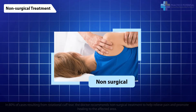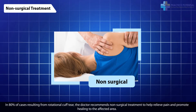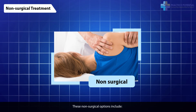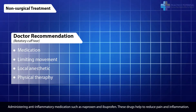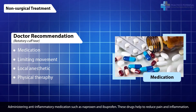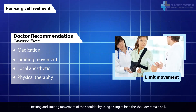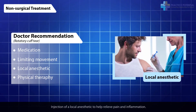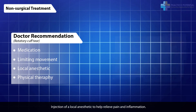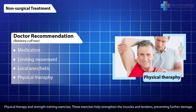Non-surgical treatment. In 80% of cases resulting from a rotator cuff tear, the doctor recommends non-surgical treatment to help relieve pain and promote healing to the affected area. These non-surgical options include administering anti-inflammatory medication such as naproxen and ibuprofen to reduce pain and inflammation, resting and limiting movement of the shoulder using a sling, injection of a local anesthetic to help relieve pain and inflammation, and physical therapy and strength training exercises to help strengthen the muscles and tendons, preventing further damage.